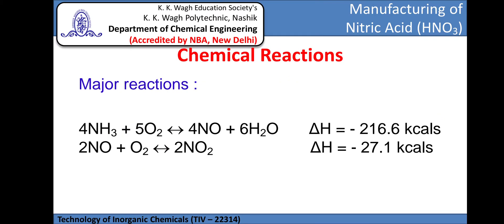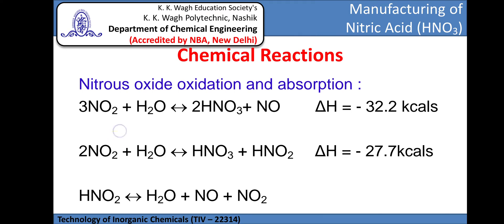The chemical reactions involved in this manufacturing process are: 4 moles of ammonia is oxidized with 5 moles of oxygen to produce nitrogen monoxide and 6 moles of H₂O. The nitrogen monoxide produced is again oxidized to produce nitrogen dioxide. This nitrogen dioxide is absorbed in water to produce nitric acid and nitrogen monoxide, and the byproduct nitrogen monoxide is again oxidized to produce nitrogen dioxide.